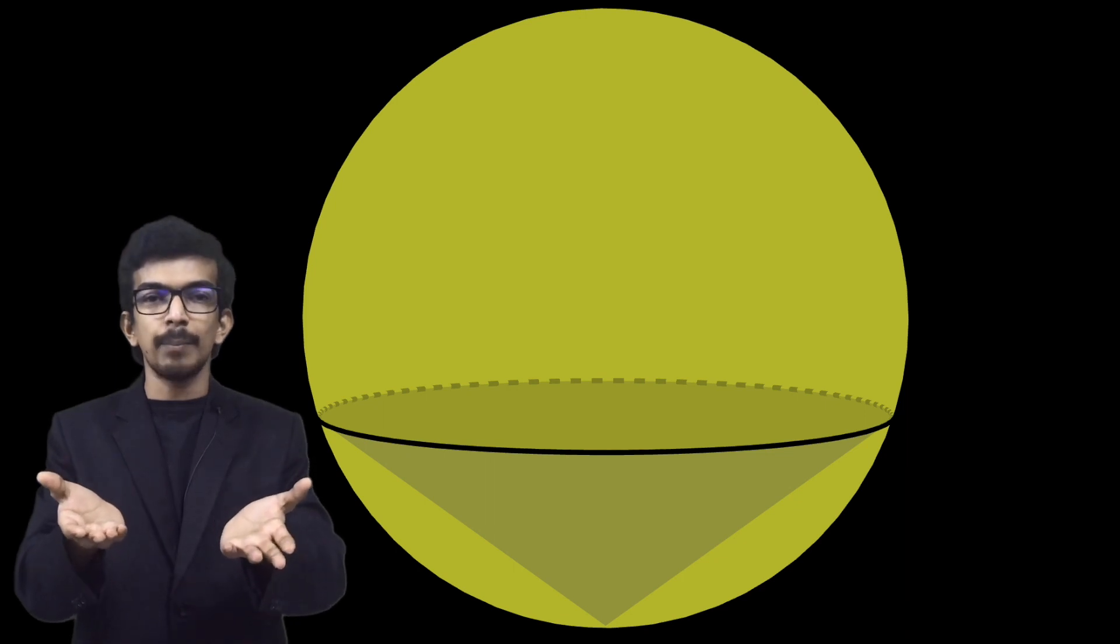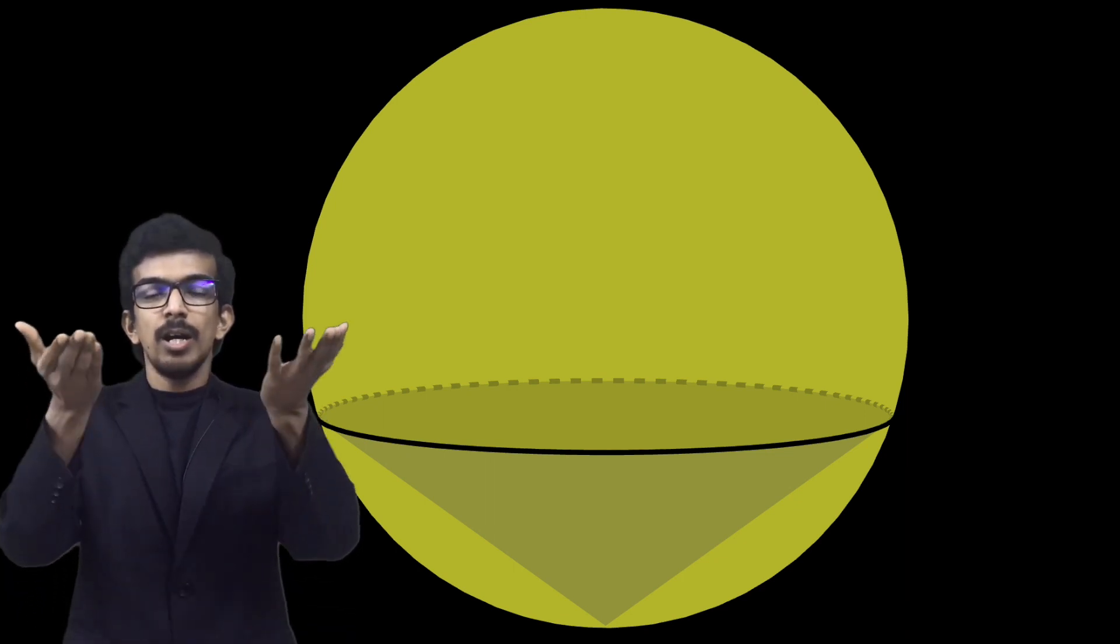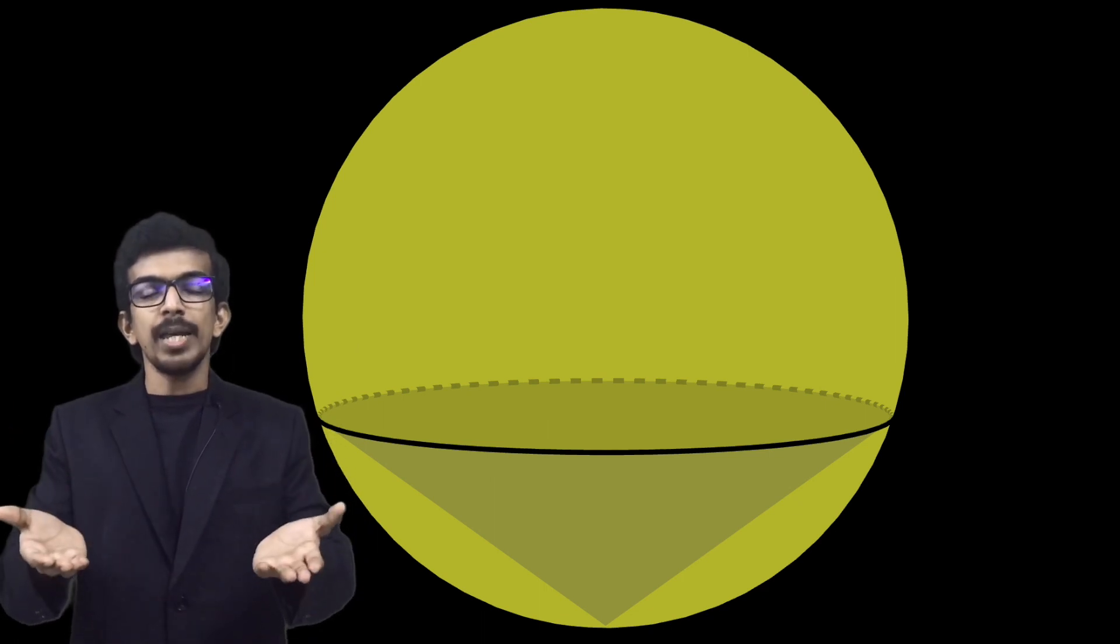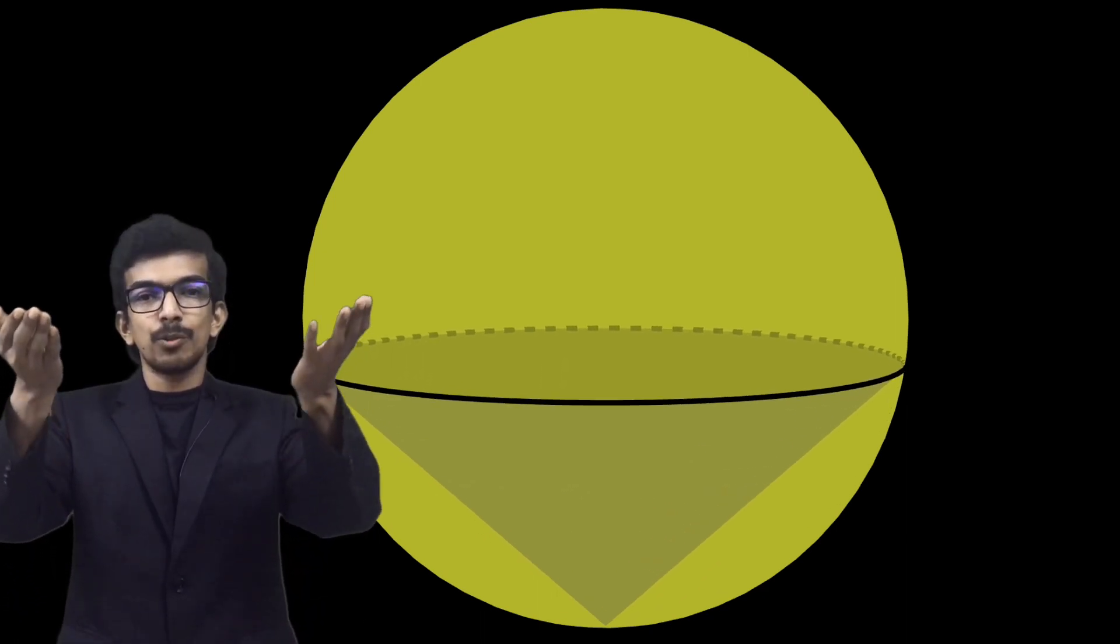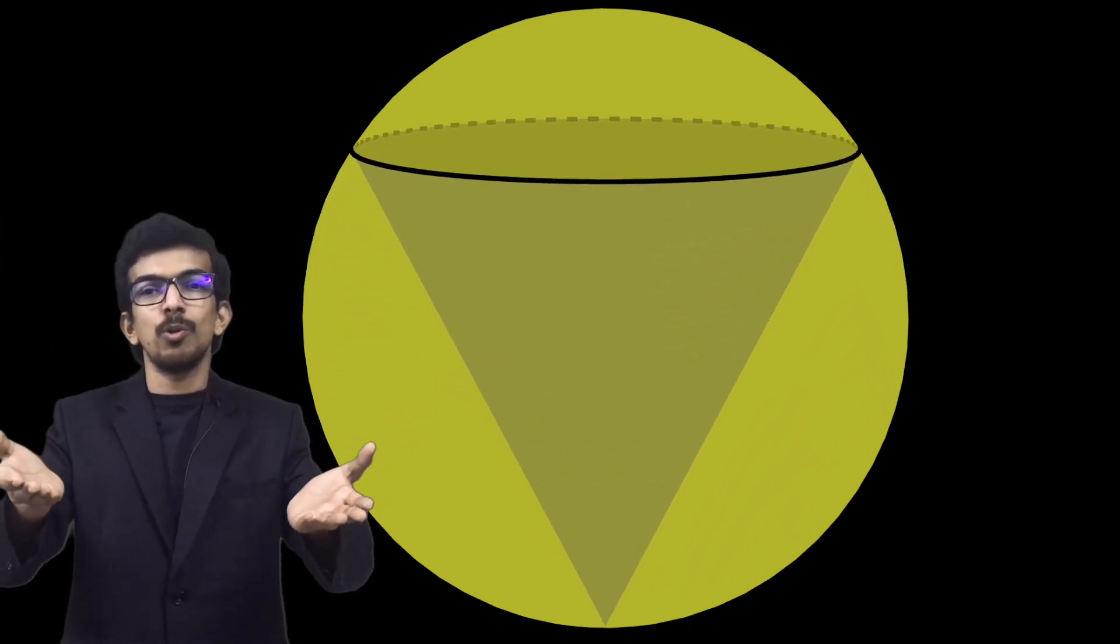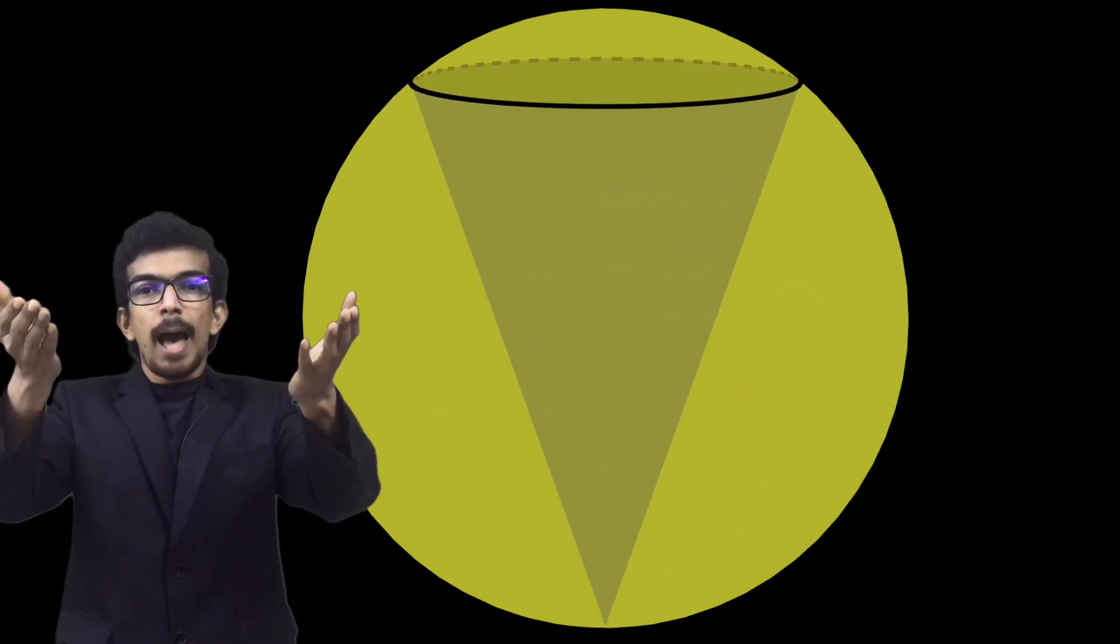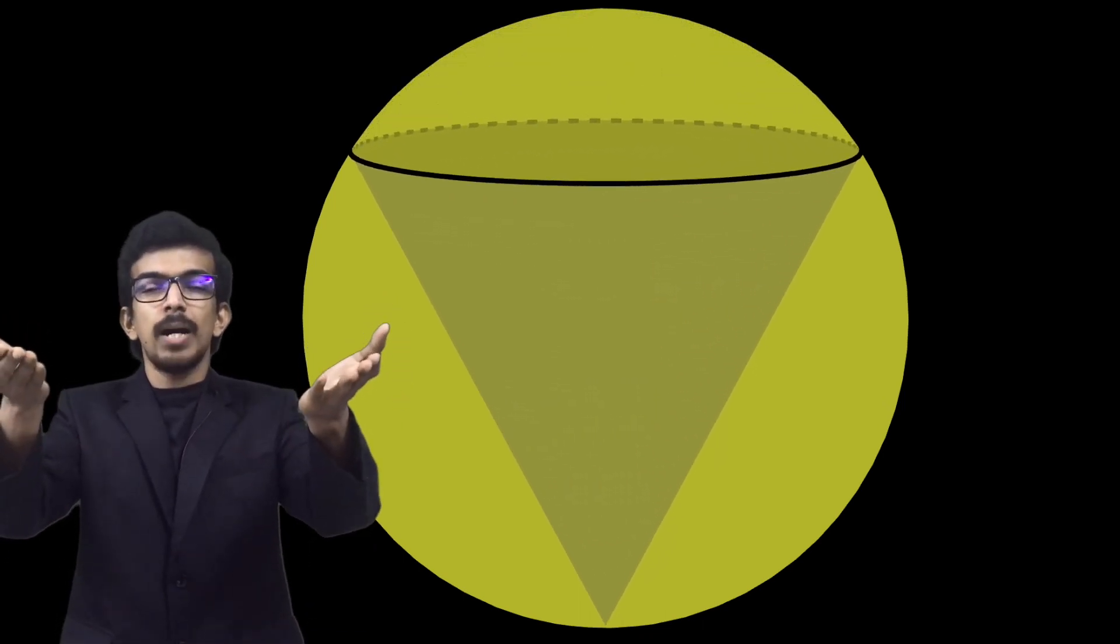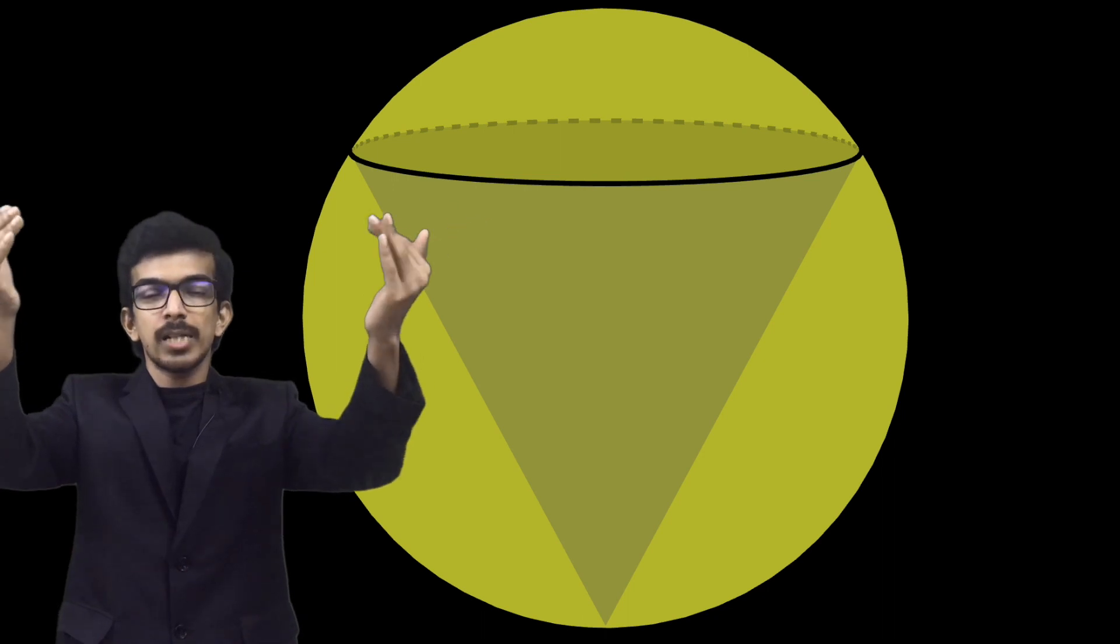Currently we have a very small cone and I'm going to try to vary the size of the cone. As I vary the radius and height of the cone, you keep getting different cones and the volume of the cone keeps increasing. At a particular point, the volume becomes maximum, and beyond which the volume keeps reducing.